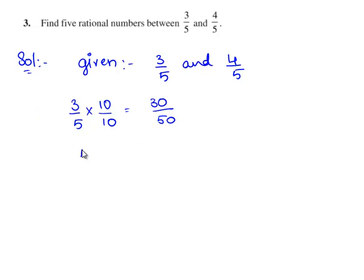Now we shall also consider 4/5 and we will multiply 4/5 by 10 on both the numerator and denominator. So we get 4 times 10 is 40, divided by 5 times 10 is 50.